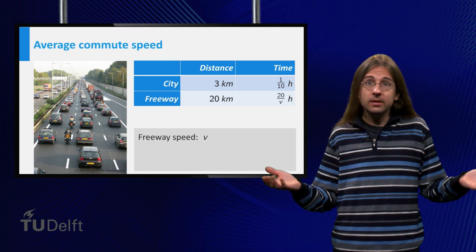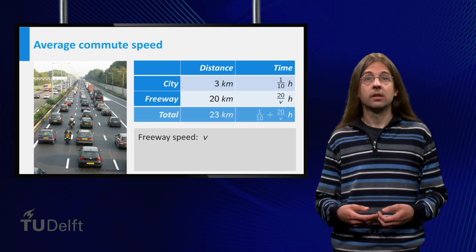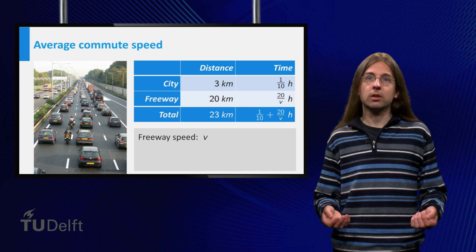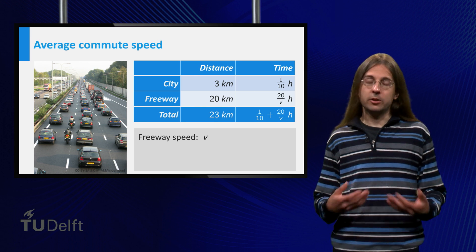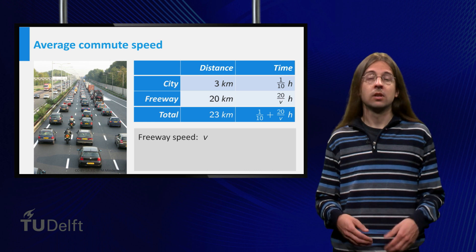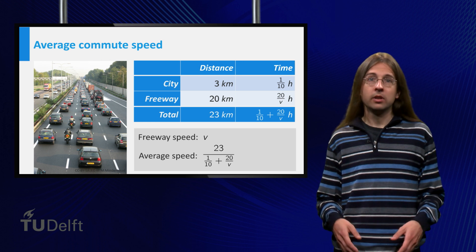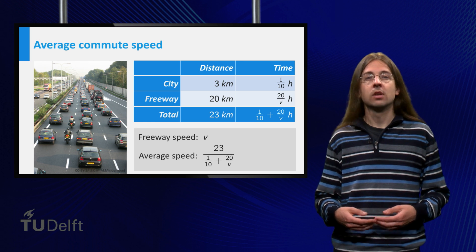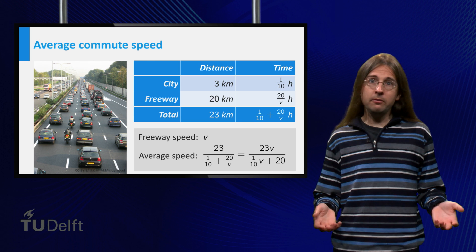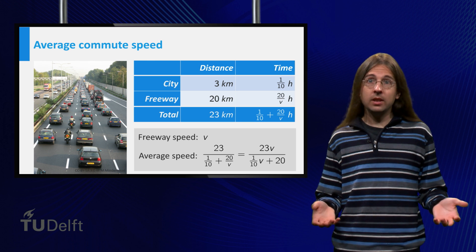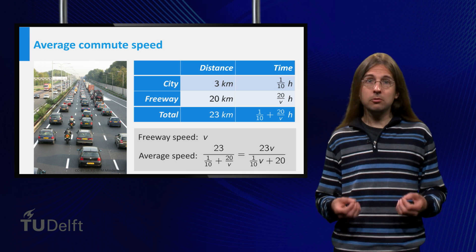What will be my average speed? Well, it is total distance divided by total time. The distance is 23 km, the time spent is 1 tenth of an hour for the city part, and 20 over v for the part on the freeway. Thus, the average speed is 23 over (1 tenth plus 20 over v). Multiplying both numerator and denominator by v, we obtain 23v over (1 tenth v plus 20). This rational function is a quotient of two linear polynomials.